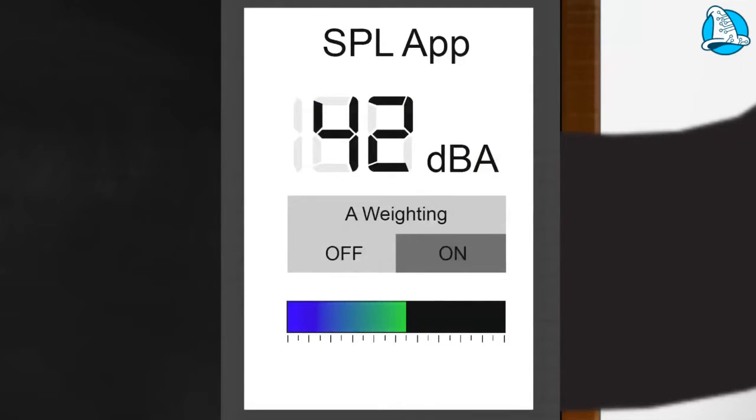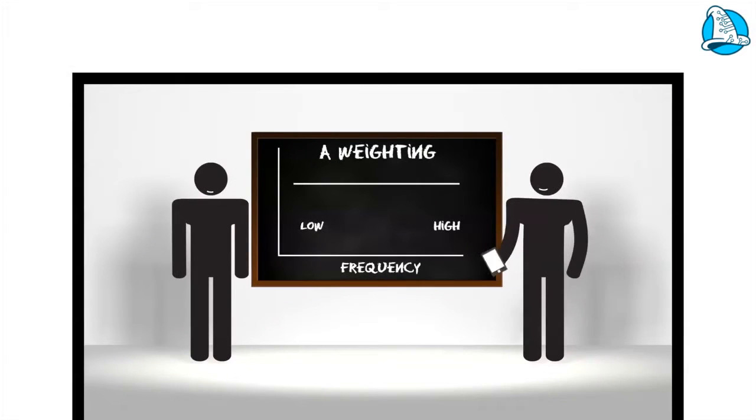You may often see a noise level presented as DBA, where the A stands for A-weighting. What this means is that the measurement has first been filtered to approximate the hearing response of a human being, as we are most sensitive to mid-frequency sounds and are less sensitive to low and high-frequency sounds.